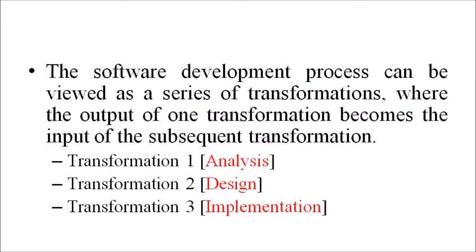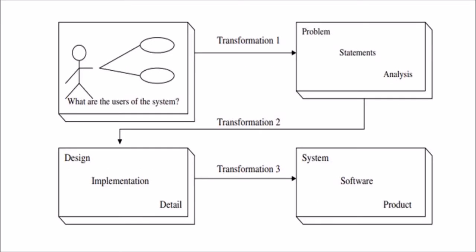The software development process can be viewed as a series of transformations where the output of one transformation becomes the input of the subsequent transformation. Generally, these transformations are divided into three stages: transformation one is the analysis, transformation two is the design, and transformation three is the implementation phase. Before transformation one, we have to analyze and make a design about what the user actually intends with this system and what the user is expecting as output.